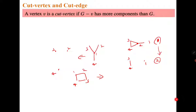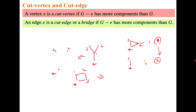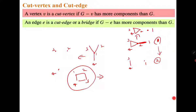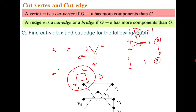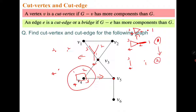In the cycle graph C4 with vertices 1, 2, 3, 4, deleting any vertex does not increase the number of components, so this graph has no cut vertex. Similarly, a cut edge — also known as a bridge — is an edge whose deletion increases the number of components. Deleting edge 1-2 from the path graph leaves vertex 1 separated from 2, 3, 4, so 1-2 is a cut edge. For the cycle graph, however, there is no cut edge. For the given example, vertices v5 and v3 are both cut vertices, and edge v5-v6 is a cut edge.